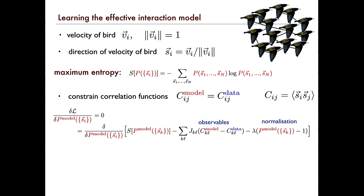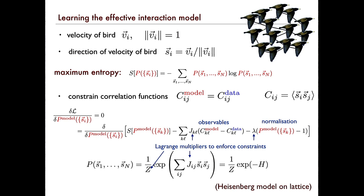We're going to maximize the entropy. We put in the entropy and the observables we want to constrain, then constrain them by Lagrange multipliers. We also ask that our probability distribution is normalized. Then we maximize it with respect to all possible models. When we do this variation, we find that the form of the probability distribution that maximizes this functional has a specific form.